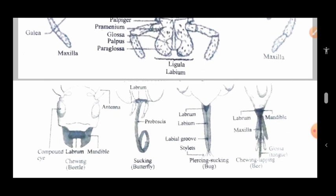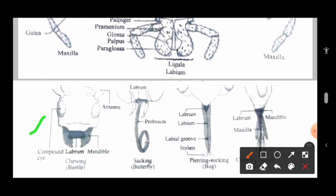The first type is the chewing and biting type. These mouthparts contain compound eyes, antenna, mandibles, and labrum. The labrum and mandibles take part in the chewing of food material and biting of food material. Examples of this type are the cockroach and grasshopper.